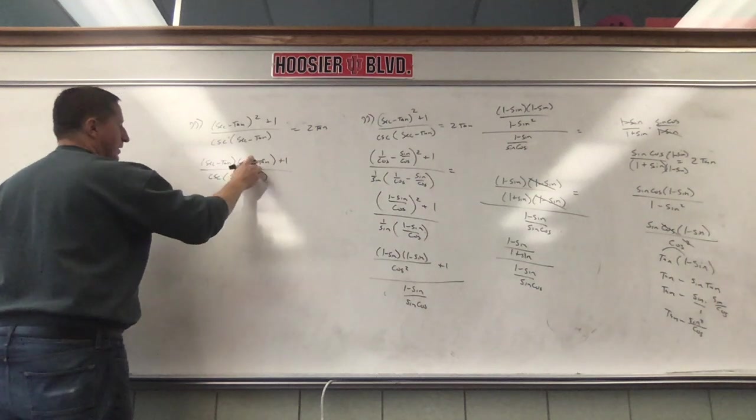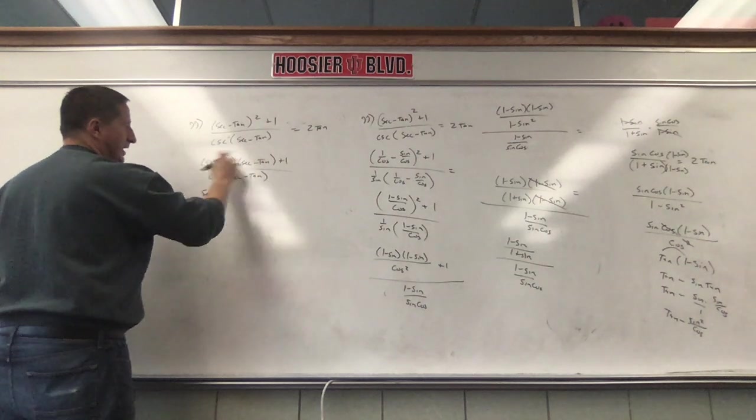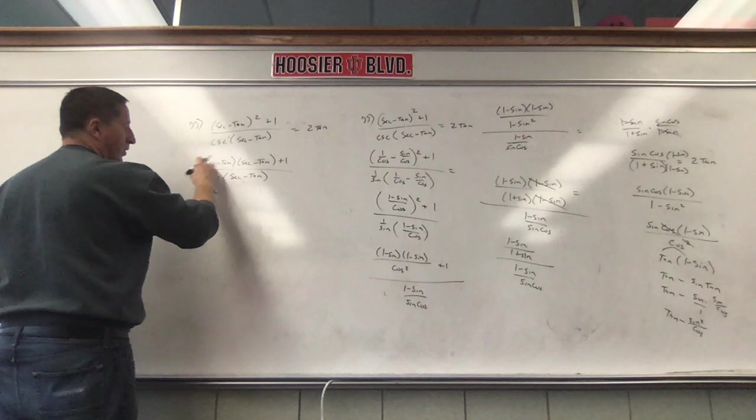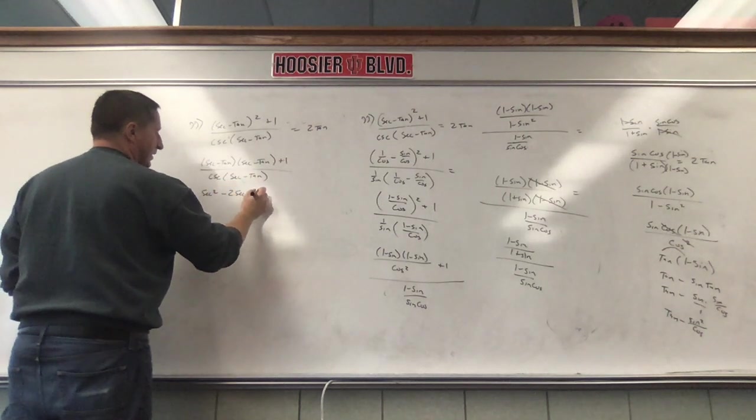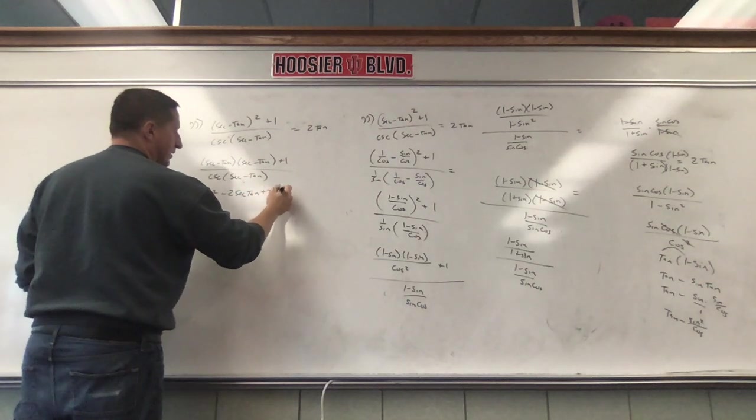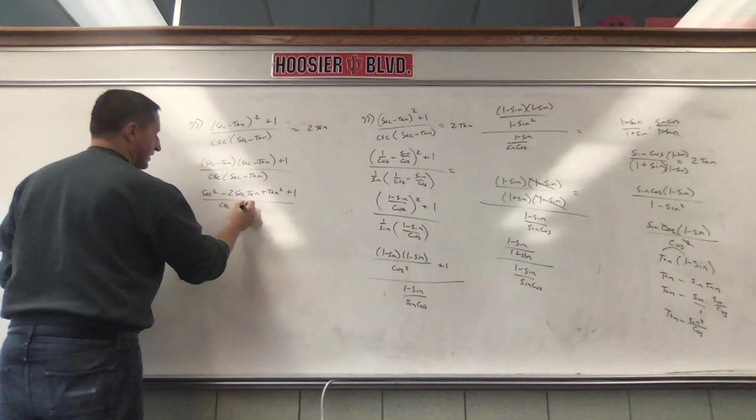Let's foil this thing out. Secant times secant is secant squared. My outer secant times negative tangent is negative secant tangent. My inners are also a negative secant tangent, so one negative secant tangent, another negative secant tangent is negative two secant tangents. And my last, negative tangent times negative tangent is positive tangent squared plus one over cosecant secant minus tangent.